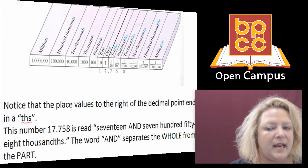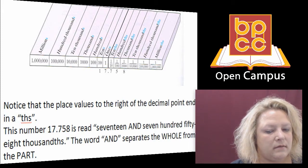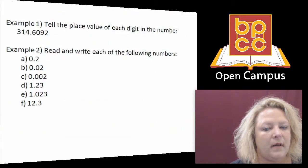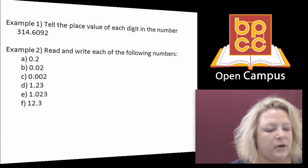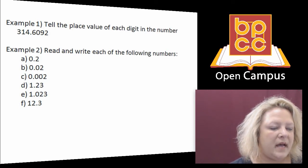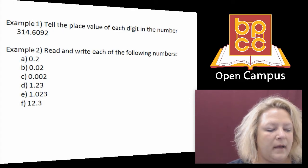So this number is seventeen and seven hundred fifty-eight thousandths. We're going to do some of these up on the board. I have example one up there and we're going to talk about the place value of each one. Then I'm going to come back and we're going to read and write those examples.